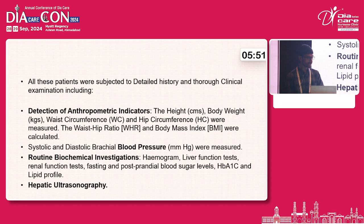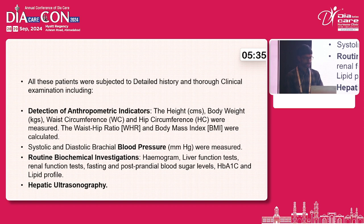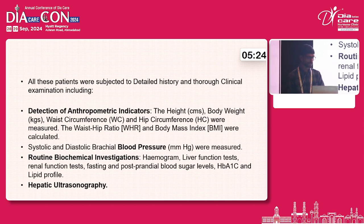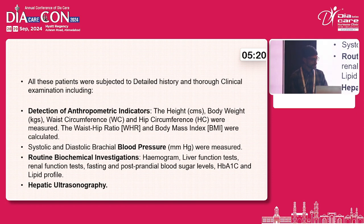All patients were subjected to detailed history and thorough clinical examination including detection of anthropometric indicators like height, weight, waist circumference, and hip circumference. Waist-hip ratio and body mass index were calculated. Systolic and diastolic blood pressure on the brachial artery was measured. Routine blood investigations like complete blood count, liver function test, renal function test, fasting and post-prandial sugar level, HbA1c, and lipid profile were done.